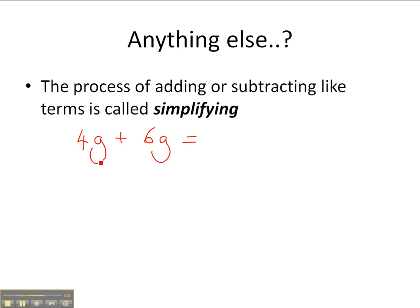Now, are these like terms? The g is exactly the same, there's no other pronumerals. The coefficient is different, but that doesn't matter. All we're looking for is the pronumeral being the same. 4g plus 6g, they are like terms and that can be simplified to 10g.